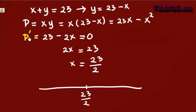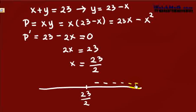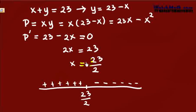Now check the sign of the derivative. The derivative is 23 minus 2x. If we take any x to the right of this number, for example x equals 15, then 23 minus 30 is negative — so on that region, the derivative of p is negative. Meanwhile, on the left region, if x equals 1, then 23 minus 2 is positive, so that area is positive. This sign tells us that the graph of p is first increasing and then decreasing.